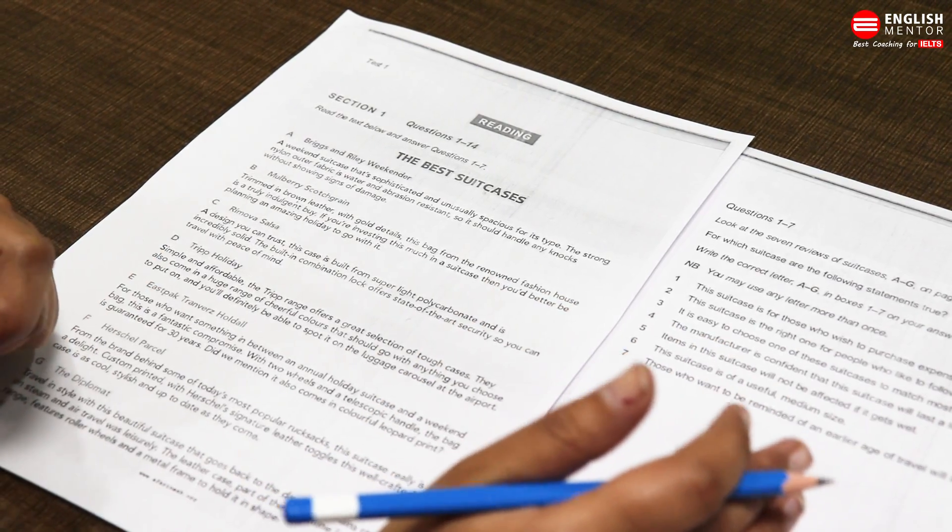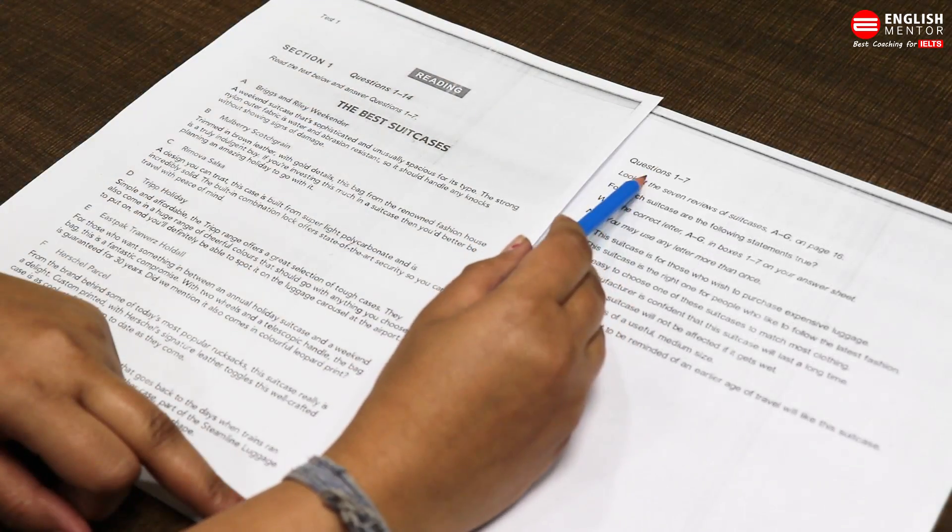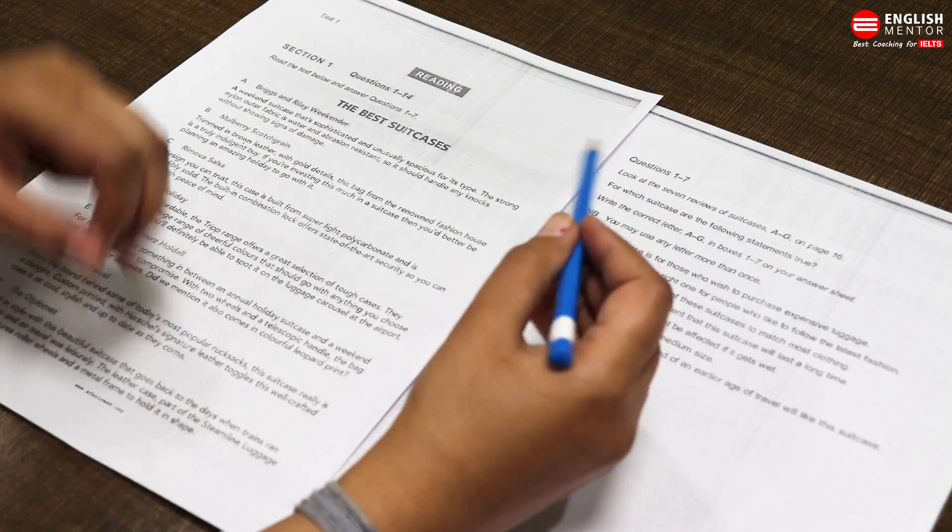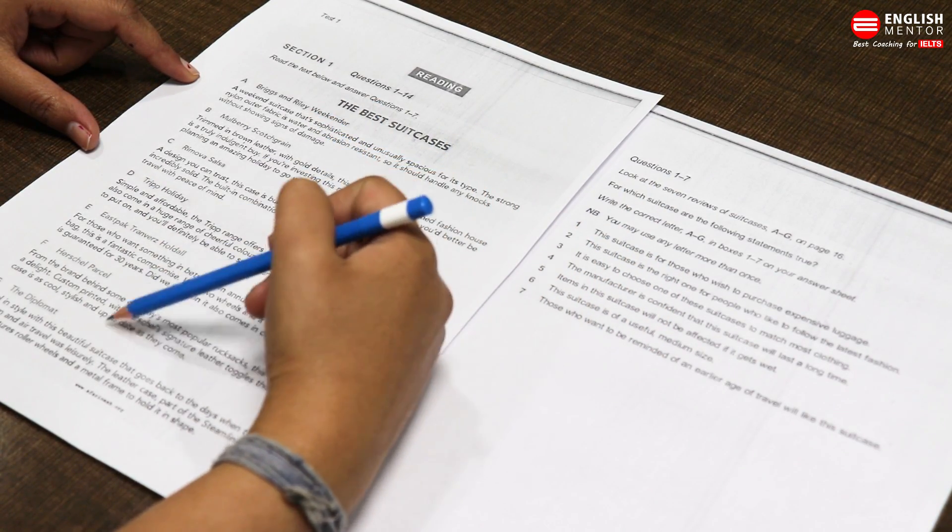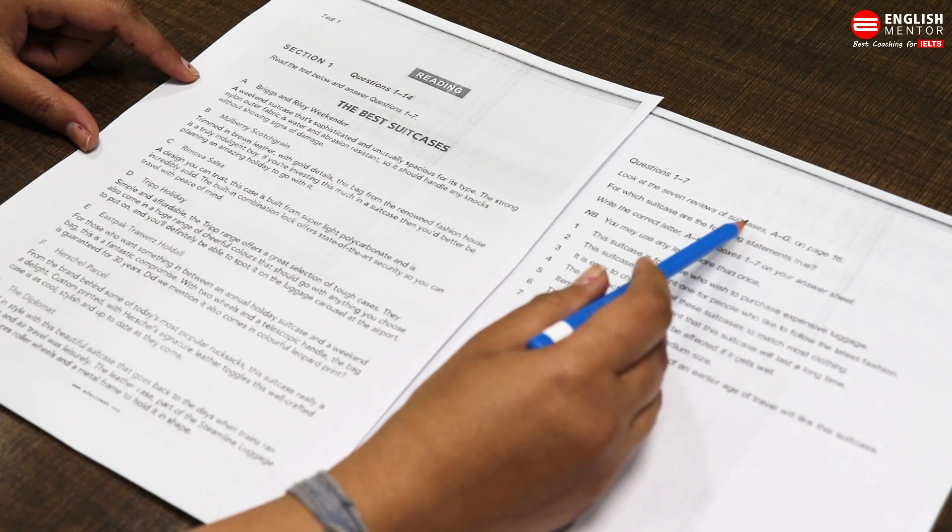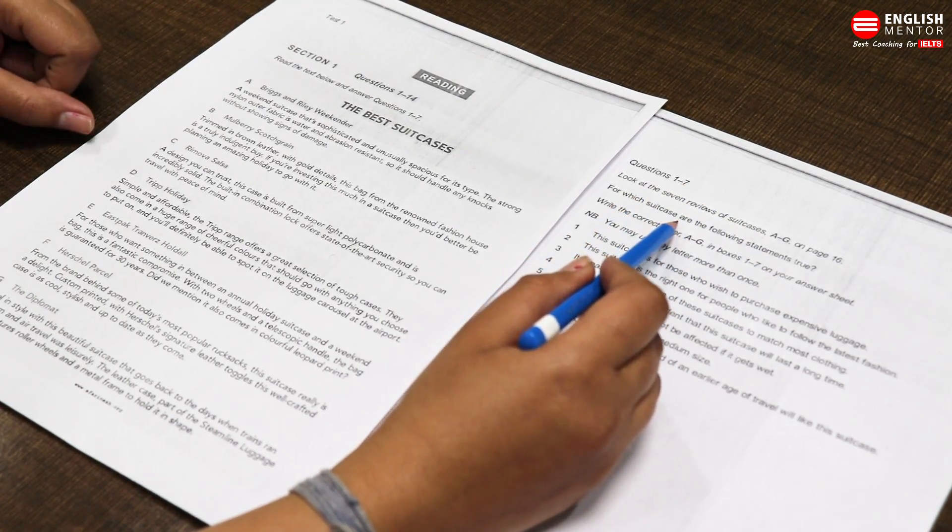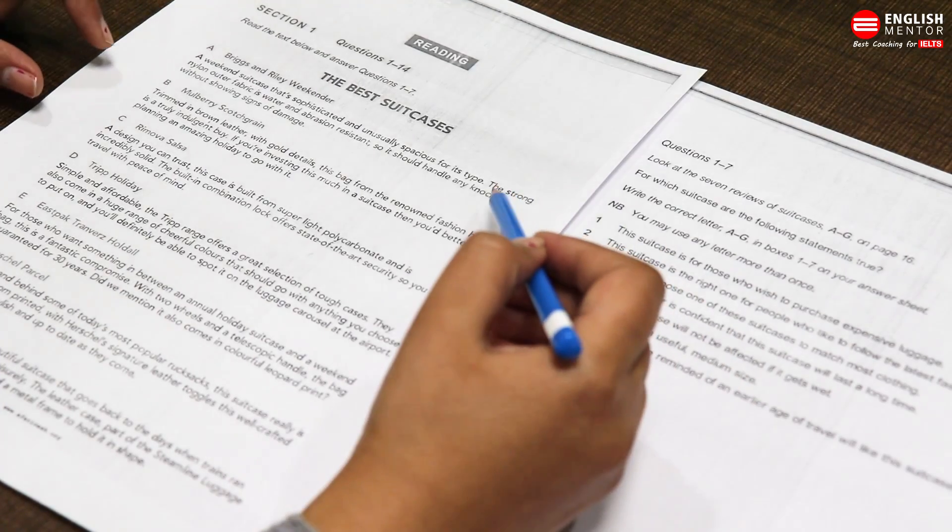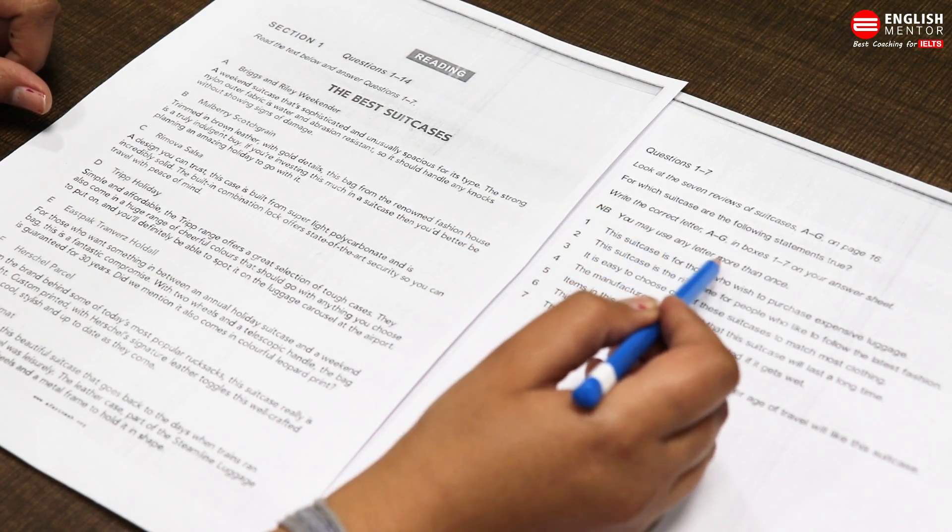Let's start with the reading. Questions one to seven: look at the seven reviews of suitcases A to G. Seven types of suitcases are given A, B, C, D, E, F, G. Therefore they are saying reviews of suitcases A to G. For which suitcase are the following statements true? Which suitcase is appropriate?